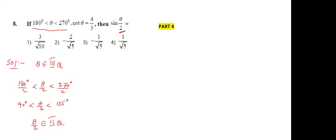Now, cot θ is given. What is cot θ? Cot θ is equal to 4 by 3. Taking a right angle triangle, cot means adjacent side divided by opposite side. So adjacent side is 4, opposite side is 3, and the hypotenuse is 5.